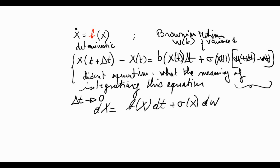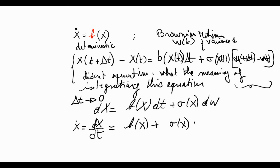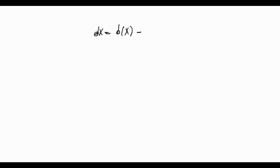This can also be written as ẋ = dx/dt = b(x) + σ(x)ẇ, where ẇ is by definition dω/dt. This notation is what you can find in many books.